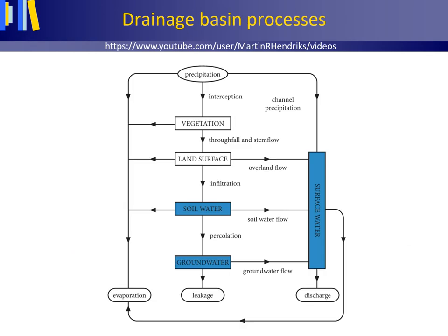Here we have a generalised scheme of drainage basin processes. As input to a drainage basin there is precipitation, and as outputs there is evaporation, leakage, and discharge. In small captions we have the processes — volumes of water per unit of time. Within the rectangles, in large captions, we have the storages — volumes of water over time — including vegetation, land surface, soil water, groundwater, and surface water.